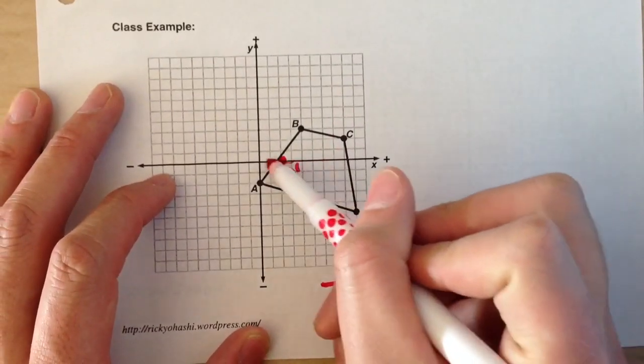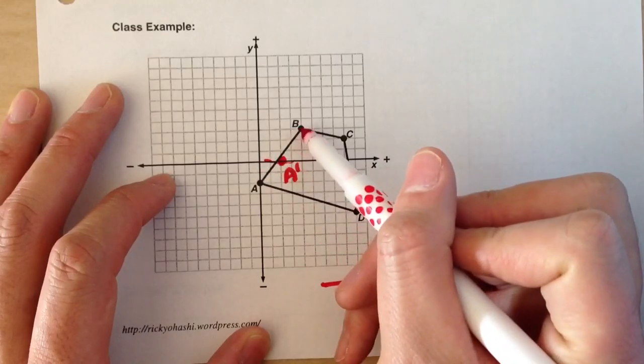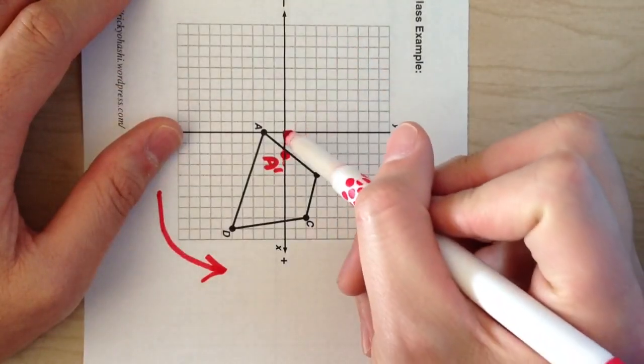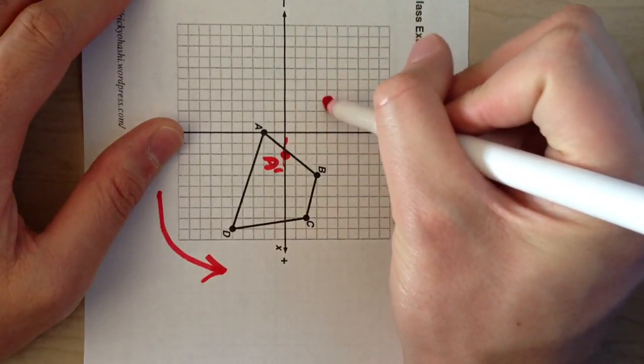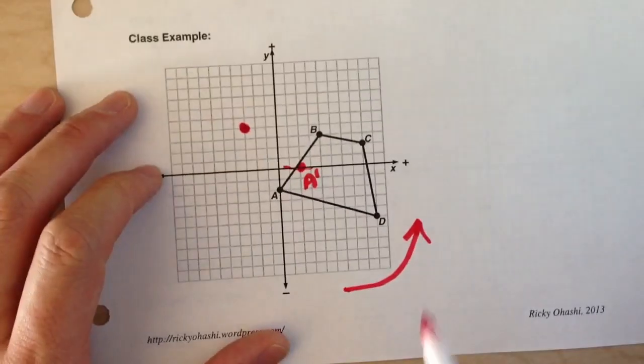So remember it was four steps to the right and three steps up. If I rotate my paper from the origin and go four steps right and three steps up, that's where B prime is going to be.